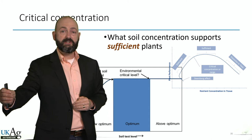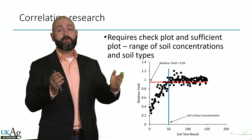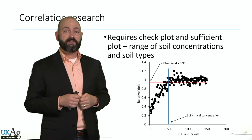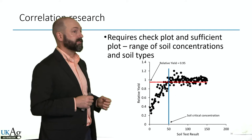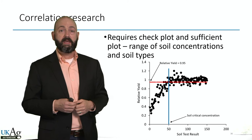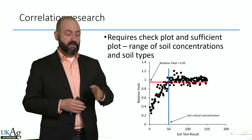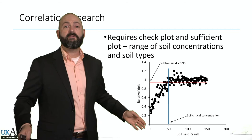When we do correlation research, we really only need two things: a zero rate and a rate that is sufficient in fertilizer. For phosphorus, I could go out to many different fields on the horizontal axis with different soil phosphorus concentrations or soil test levels. I have two plots side by side — one with no phosphorus fertilizer and one with a sufficient rate, maybe 150 pounds per acre of P2O5.